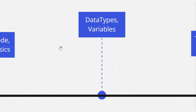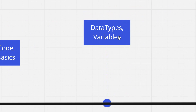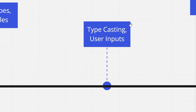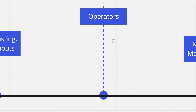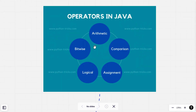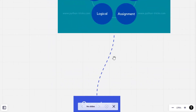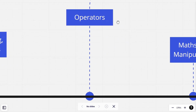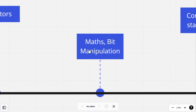After basic syntax, we will learn about data types and variables. Then we will learn about user input and type casting — like how you can convert an integer value to a floating value and vice versa. After that we will talk about operators. There is a flowchart shown here. We will be learning about arithmetic, bitwise, logical, assignment, and comparison operators.